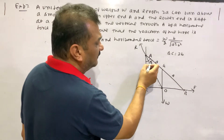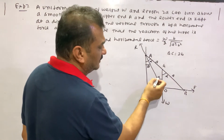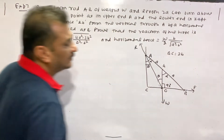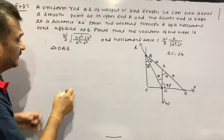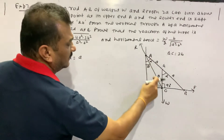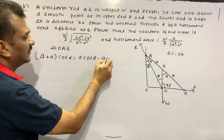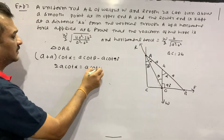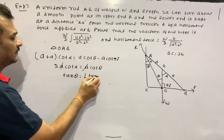Let this angle be alpha and this angle be theta. In triangle OAB, using the MN theorem: A cot alpha plus A cot alpha equals A cot theta minus A cot 90 degrees. Then 2A cot alpha equals A cot theta, giving tan theta equal to one-half tan alpha. Take this as result 1.